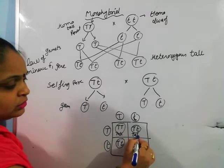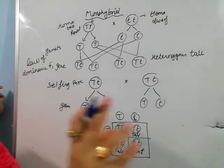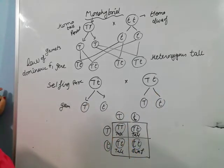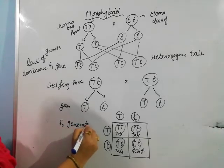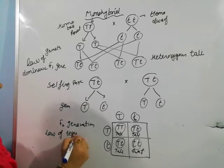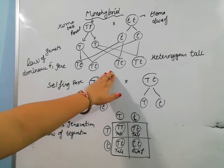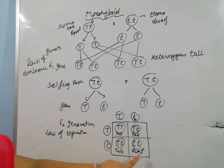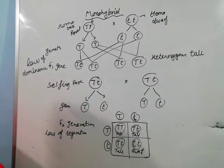Capital T small t is tall, and small t small t is dwarf. When you write capital T small t, the law of dominance applies — the capital letter dominates so you can show that character. This is the F2 generation, and here the law of segregation applies. The law of segregation states that if characters are mixed in one generation, when you cross two heterozygous plants they will separate, and the recessive character will reappear in the homozygous condition.